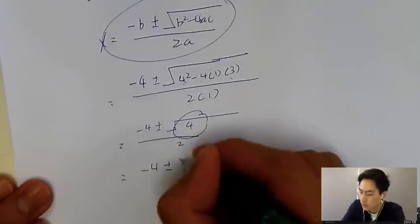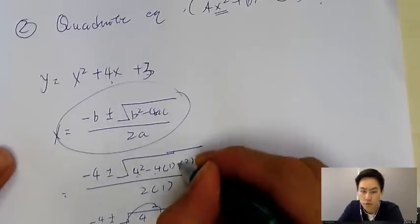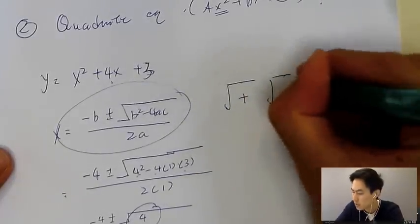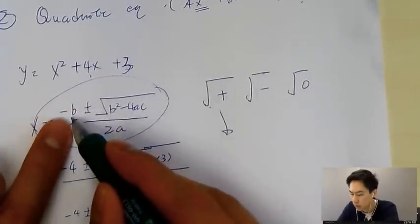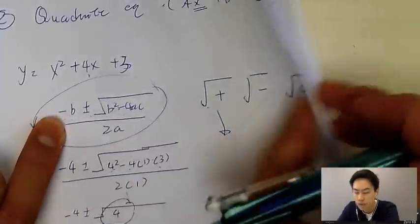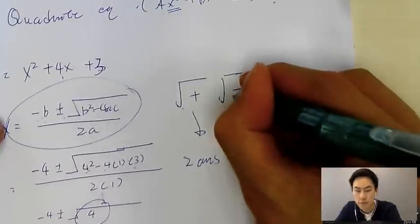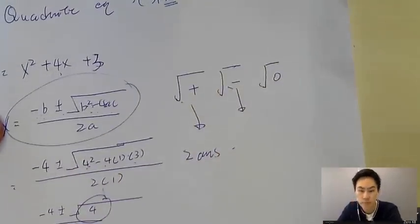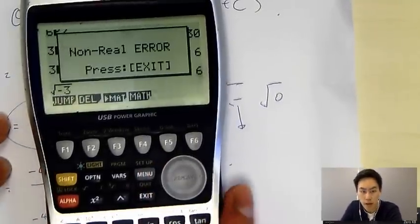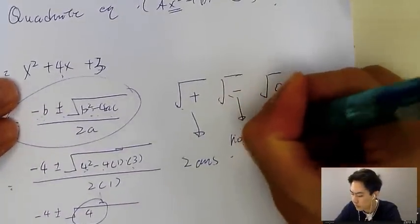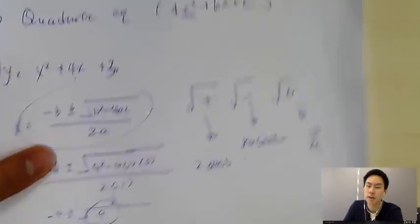The key is how this connects to b squared minus 4ac. If the value under the square root is positive, you get two answers: minus b plus something, or minus b minus something — two distinct roots. If b squared minus 4ac is negative, you'd be taking the square root of a negative number, which gives an error — no real solution. If it equals zero, then the square root of zero is just zero, so you only get minus b over 2a — one answer.